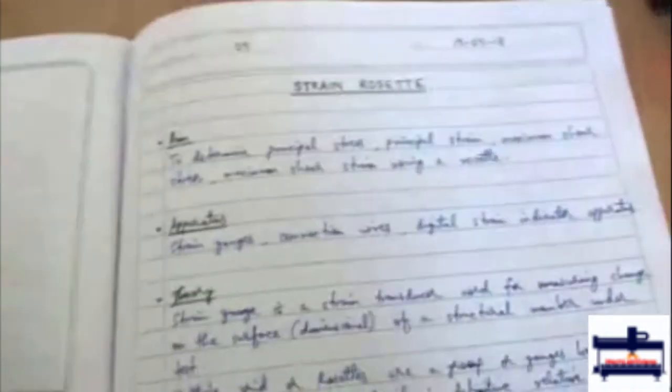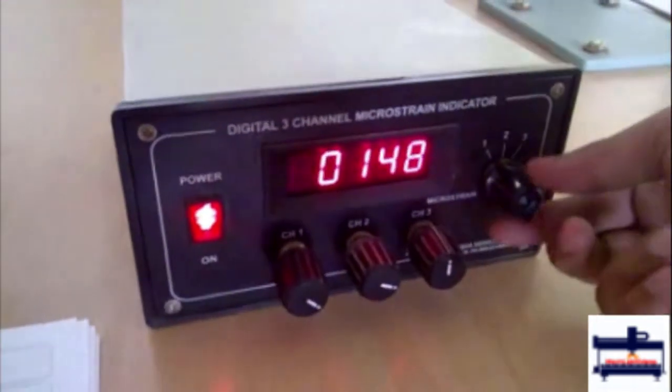So this is the strain rosette experiment. First thing we do is we switch on the power and then we shift this to channel 1.